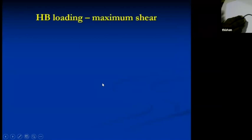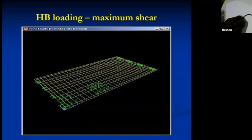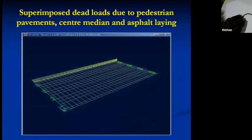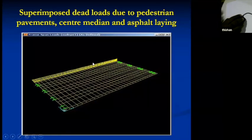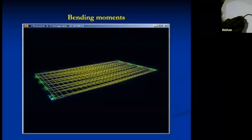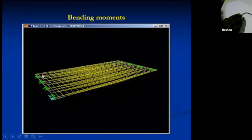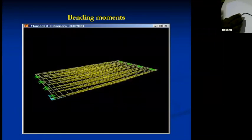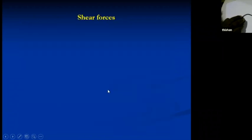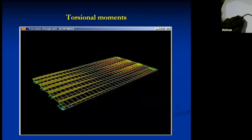You can have pedestrian loads, asphalt concrete weight, and all other loads applied on the grillage. Before running the analysis, you must ensure one side is fixed and the other is free to move — support conditions are very important. Once you run the analysis, you get bending moments, shear forces, and torsional moments. Using British Standard or Eurocodes, there are straightforward design methods to find the reinforcement required to resist these forces.